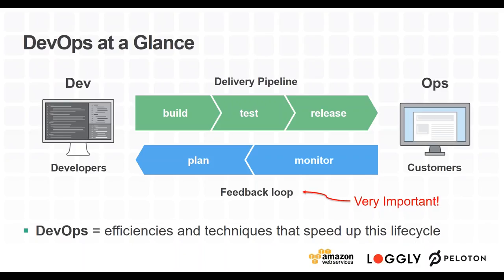A lot of people overlook the feedback loop, which is arguably the most important part of your DevOps practice. It tells your operations and development teams what's going on in production — what users are experiencing every day. This feedback loop contains metrics, log data, and general health information about the production application, giving your organization the visibility needed to make strategic and innovative decisions.